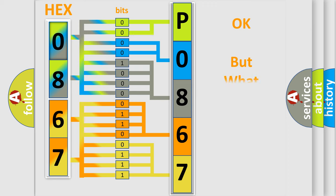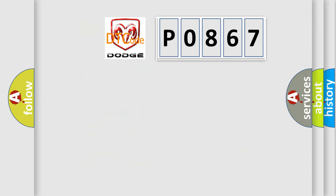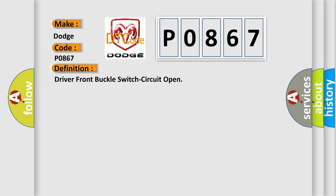A single byte conceals 256 possible combinations. We now know how the diagnostic tool translates the received information into a more comprehensible format. The number itself does not make sense if we cannot assign information about what it actually expresses. So, what does the diagnostic trouble code P0867 interpret specifically for Dodge car manufacturers? The basic definition is: Driver front buckle switch circuit open.